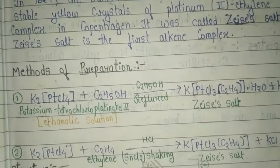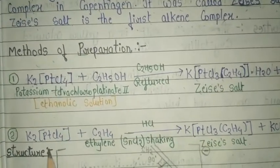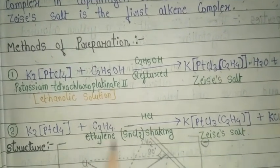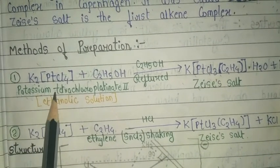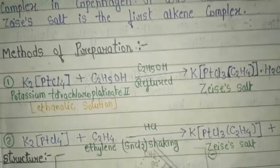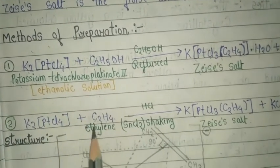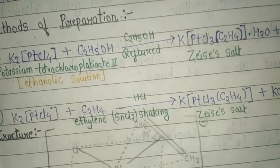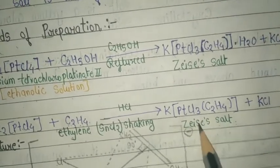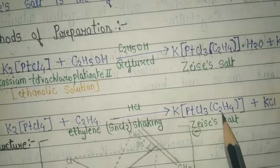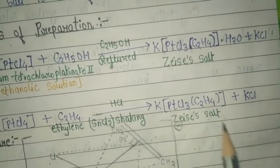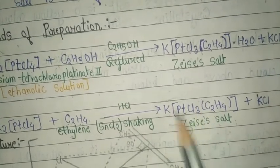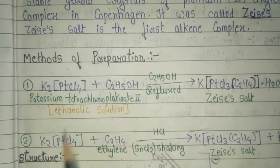The second method: K₂PtCl₄ (potassium tetrachloroplatinate(II)), also called ethanolic solution, reacts with C₂H₄ (ethylene) in the presence of SnCl₂. After this reaction, Zeise's salt is formed, with the formula K[PtCl₃(C₂H₄)] plus KCl. H₂O is also part of the product. These are the two simple methods by which Zeise's salt is prepared.